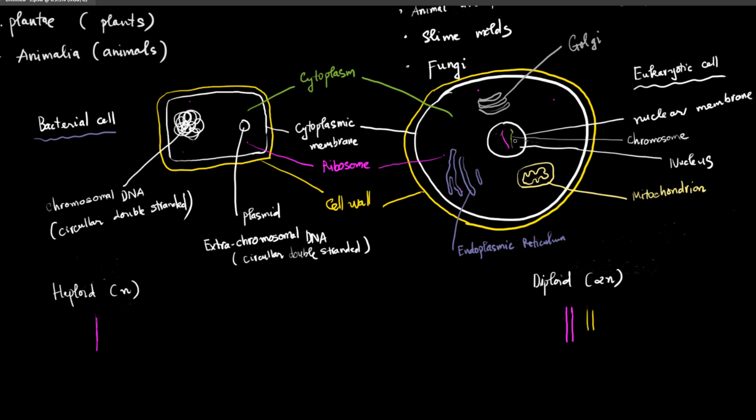This can be roughly understood as eukaryotic cells having two copies of every single gene. One copy comes from the father and another copy comes from the mother.